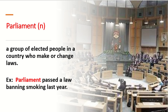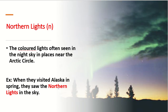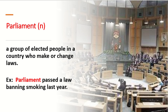Now let's study the new vocabulary. Today we have three new vocabularies. The first one: Parliament. Parliament is a noun, and parliament is a group of elected people in a country who make or change laws — they have the right to make or change laws. This is the Parliament House in Jordan, and those are the members of parliament. Example: Parliament passed a law banning smoking last year.